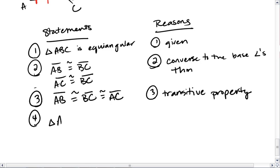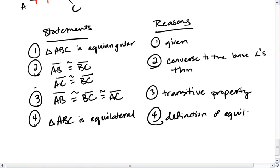Which means that triangle ABC is equilateral. This is by the definition of equilateral.